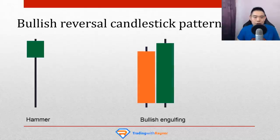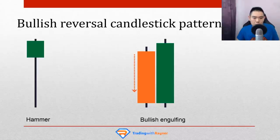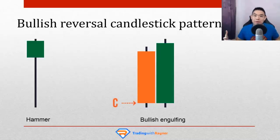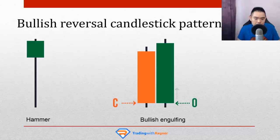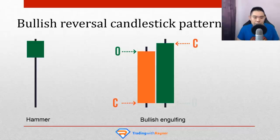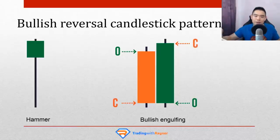Another pattern worth learning is the bullish engulfing pattern. The story is similar but expressed using two candles. The first is a red bearish candle — sellers took control and closed near the lows. The next day, buyers got revived and pushed the price to close near the highs, opening below the previous day's close and closing even higher than the previous day's opening price. The buyers overwhelmed the sellers entirely. This is what we call a bullish engulfing pattern.